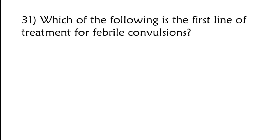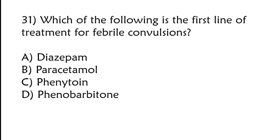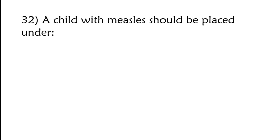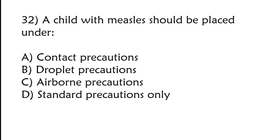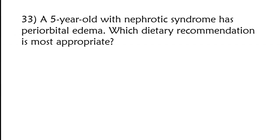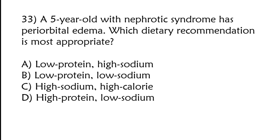Which of the following is the first line of treatment for febrile convulsions? Diazepam. Correct answer is option A, diazepam. A child with measles should be placed under contact precautions, droplet precautions, airborne precautions, standard precautions only. A 5-year-old with nephrotic syndrome has periorbital edema. Which dietary recommendation is most appropriate? Low protein high sodium, low protein low sodium, high sodium high calorie, high protein low sodium. Correct answer is option D, high protein low sodium.